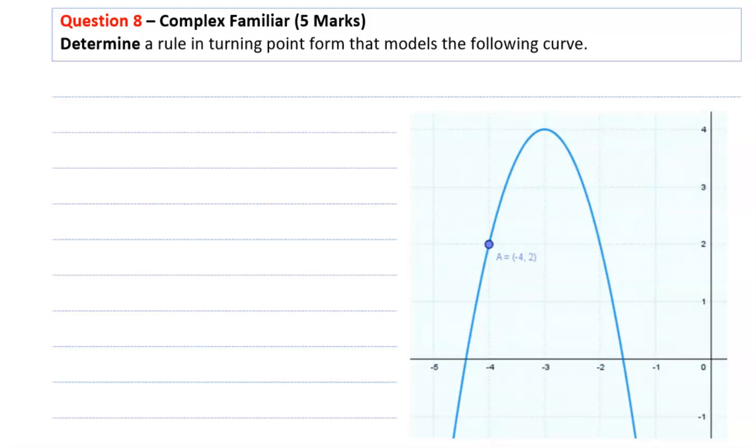Determine a rule in turning point form that models the following curve. The curve is a parabola, so we identify some key points. The turning point is at negative 3 across and 4 up on the y-axis.